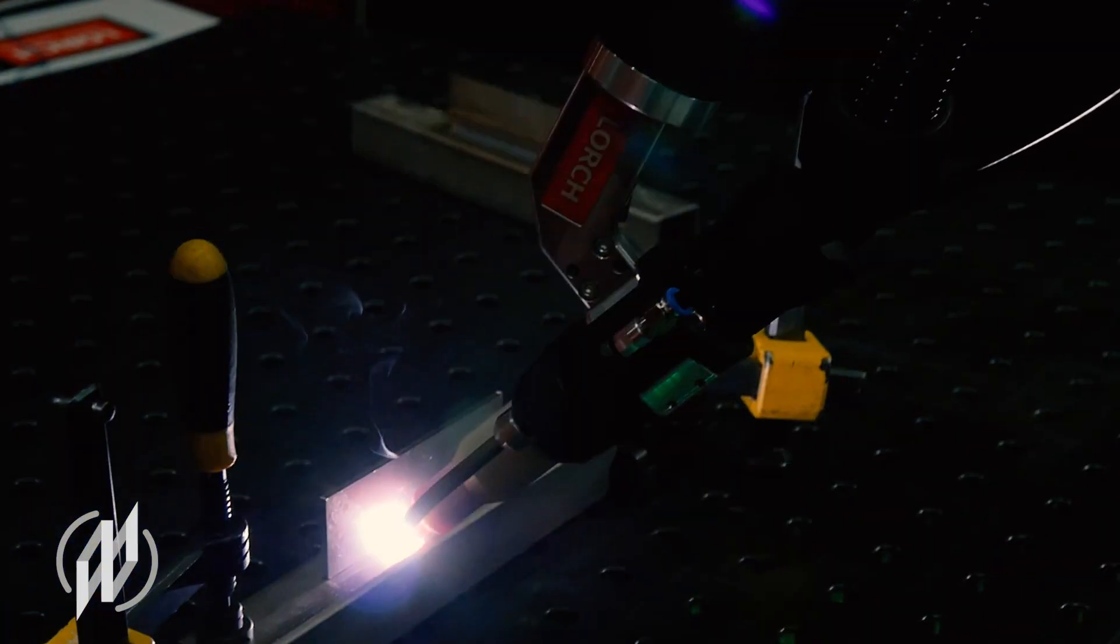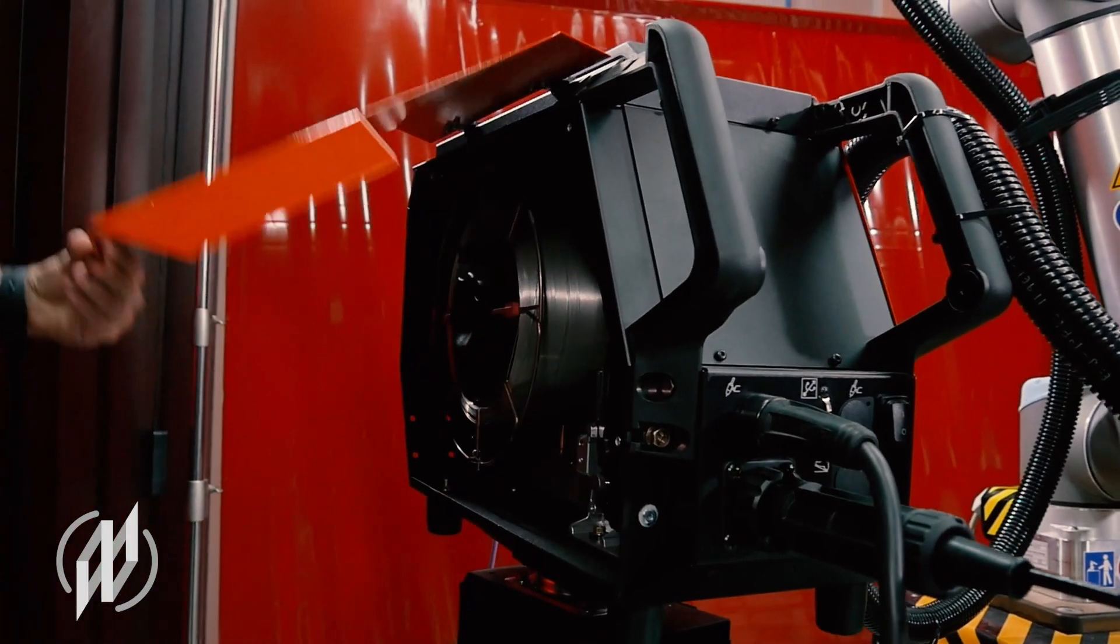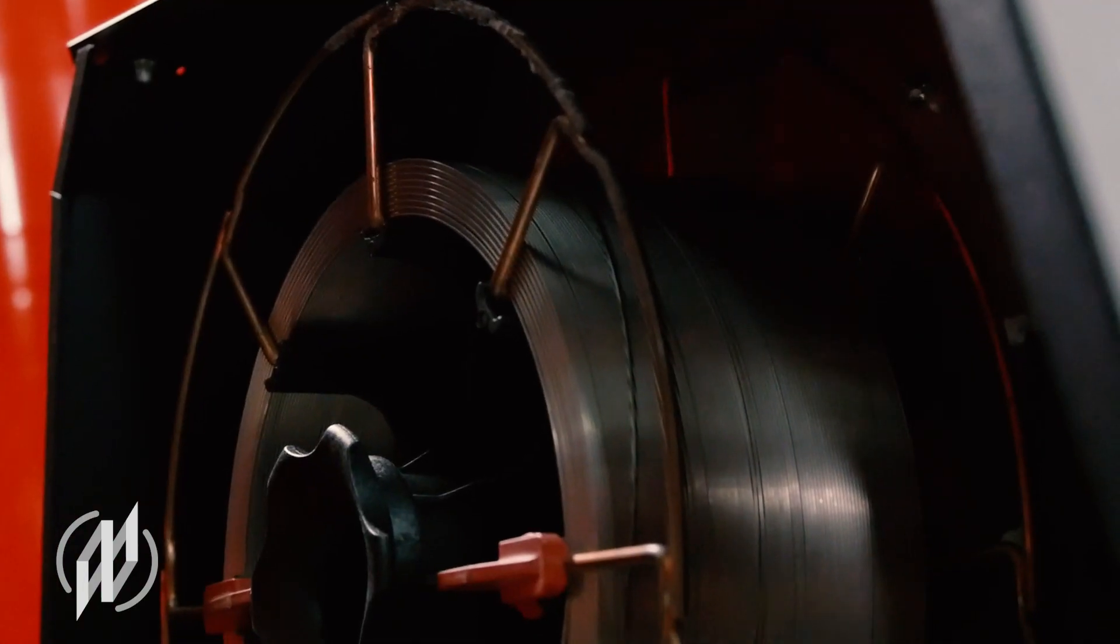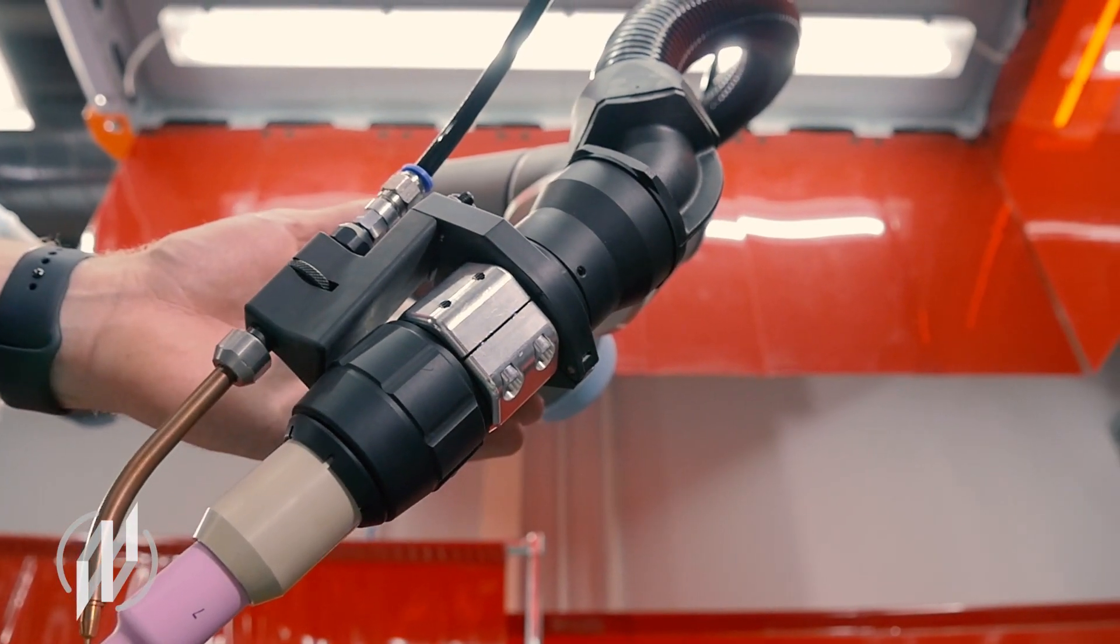We've already had a TIG cold wire system on the market for more than 10 years. In this case the filler wire is fed directly into the weld pool via a wire delivery tube. This means that all applications that are welded by hand can be covered, which welders otherwise weld with filler wire. These can all be welded with a Corbot.